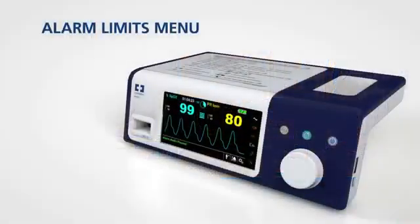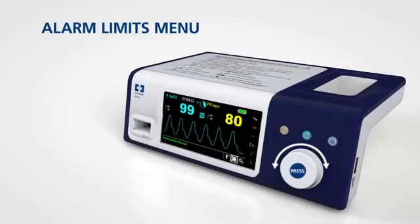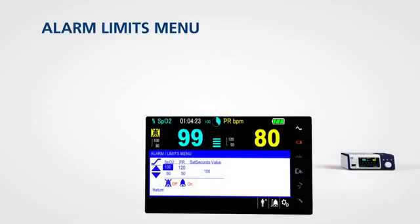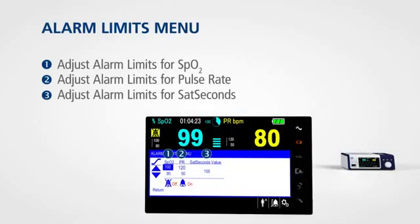To access the alarm limits menu for SPO2, pulse rate, and sat seconds, rotate the jog dial to highlight the alarm limits display area and press. The sat seconds alarm menu allows you to adjust settings to minimize clinically insignificant alarms that occur with your patient.